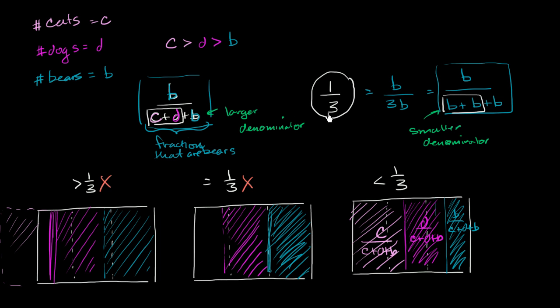And since we know this has a larger denominator, this has a smaller denominator, they have the exact same numerator. They both have b as a numerator. We know that this whole thing must be a smaller quantity. If you have the same numerator, but one expression has a larger denominator, it must be smaller.